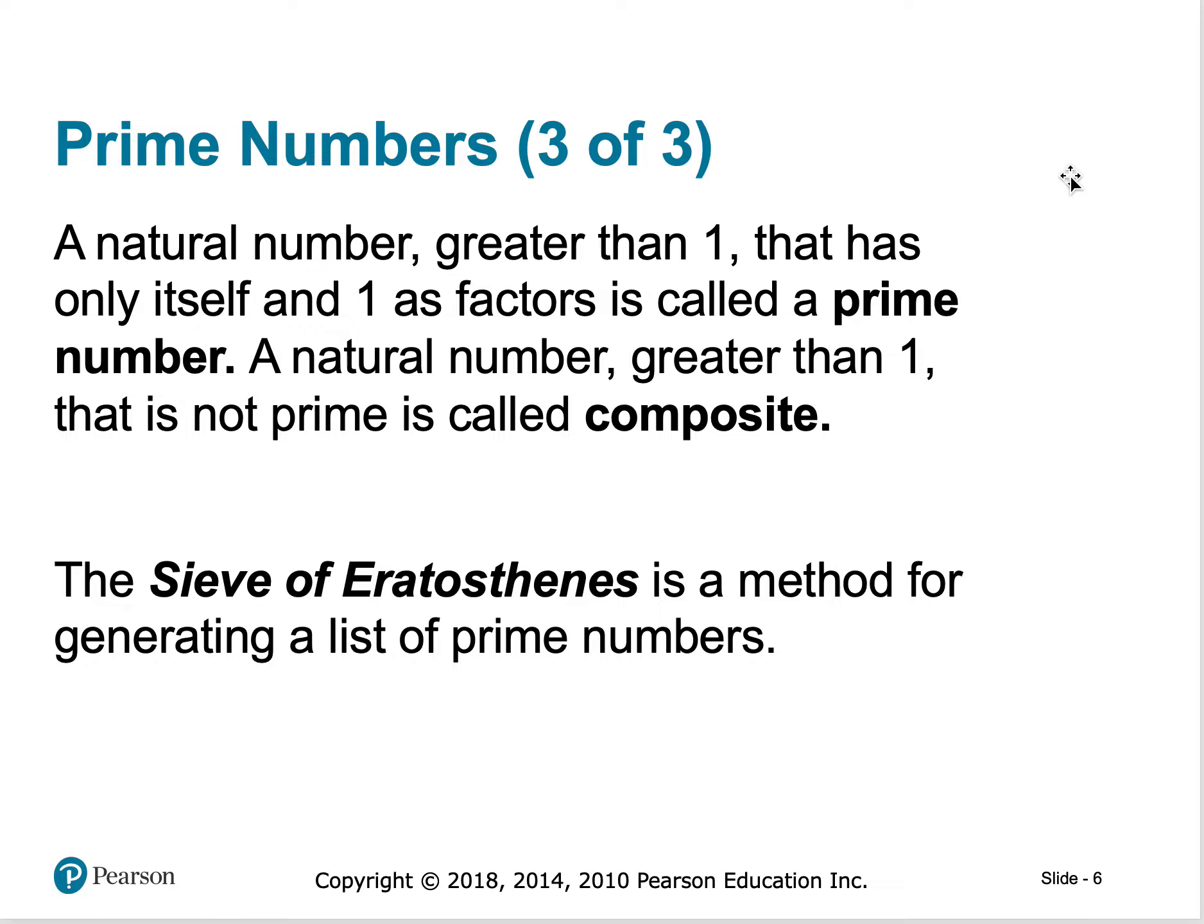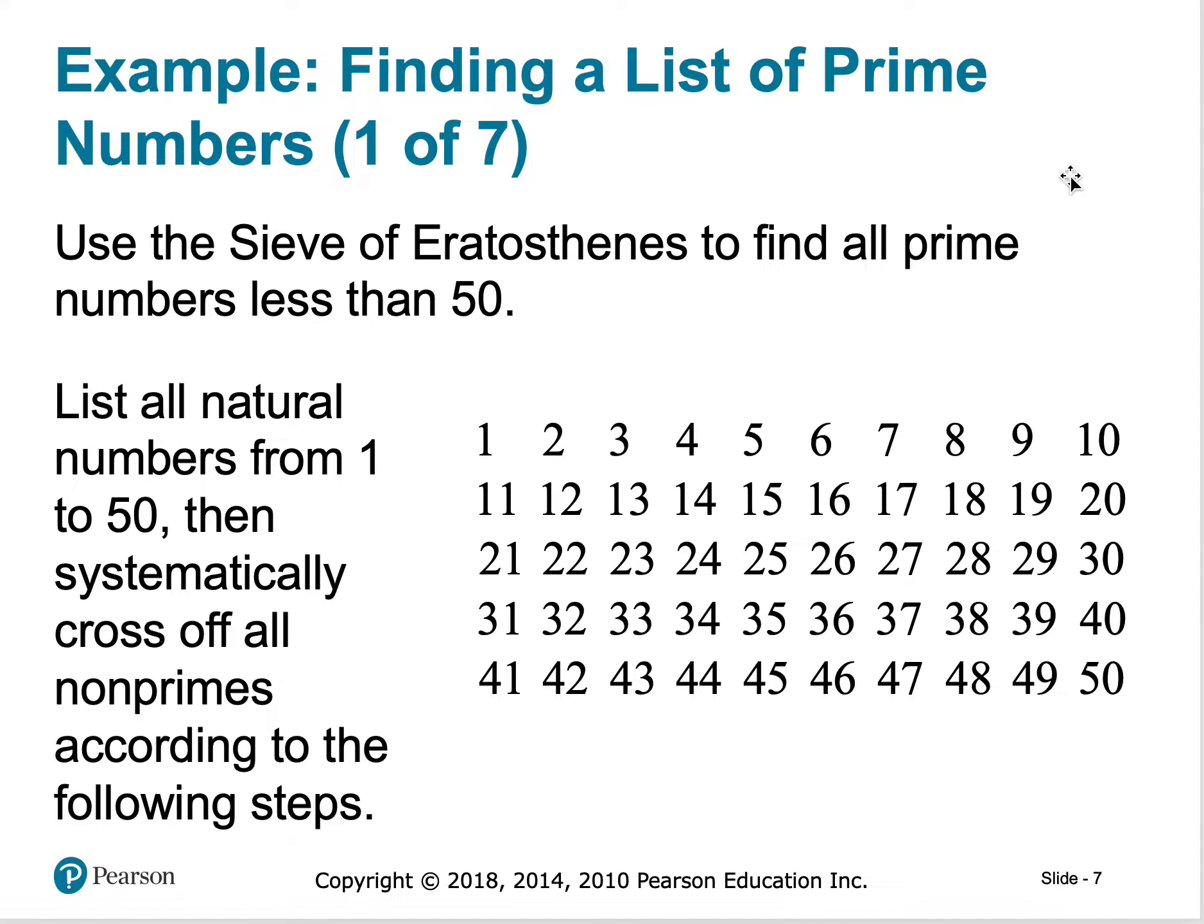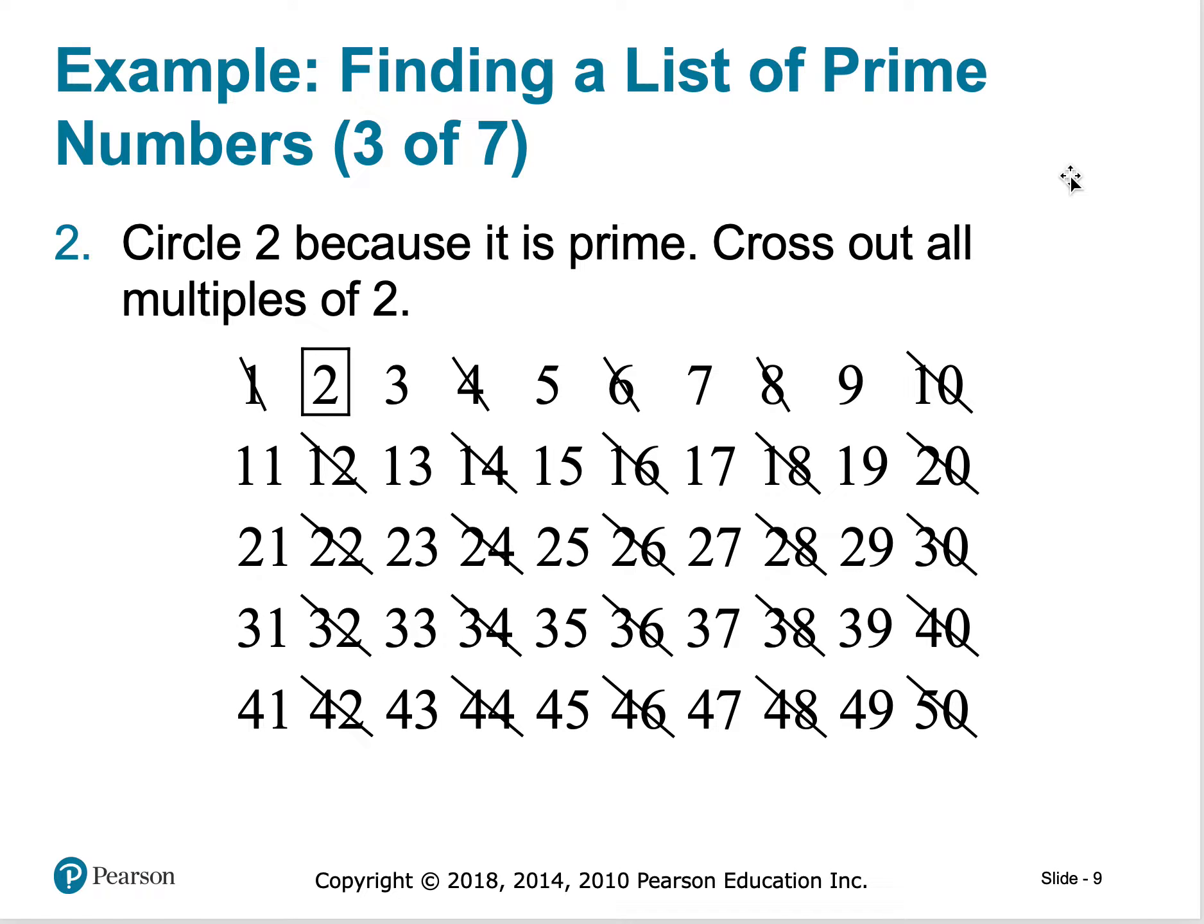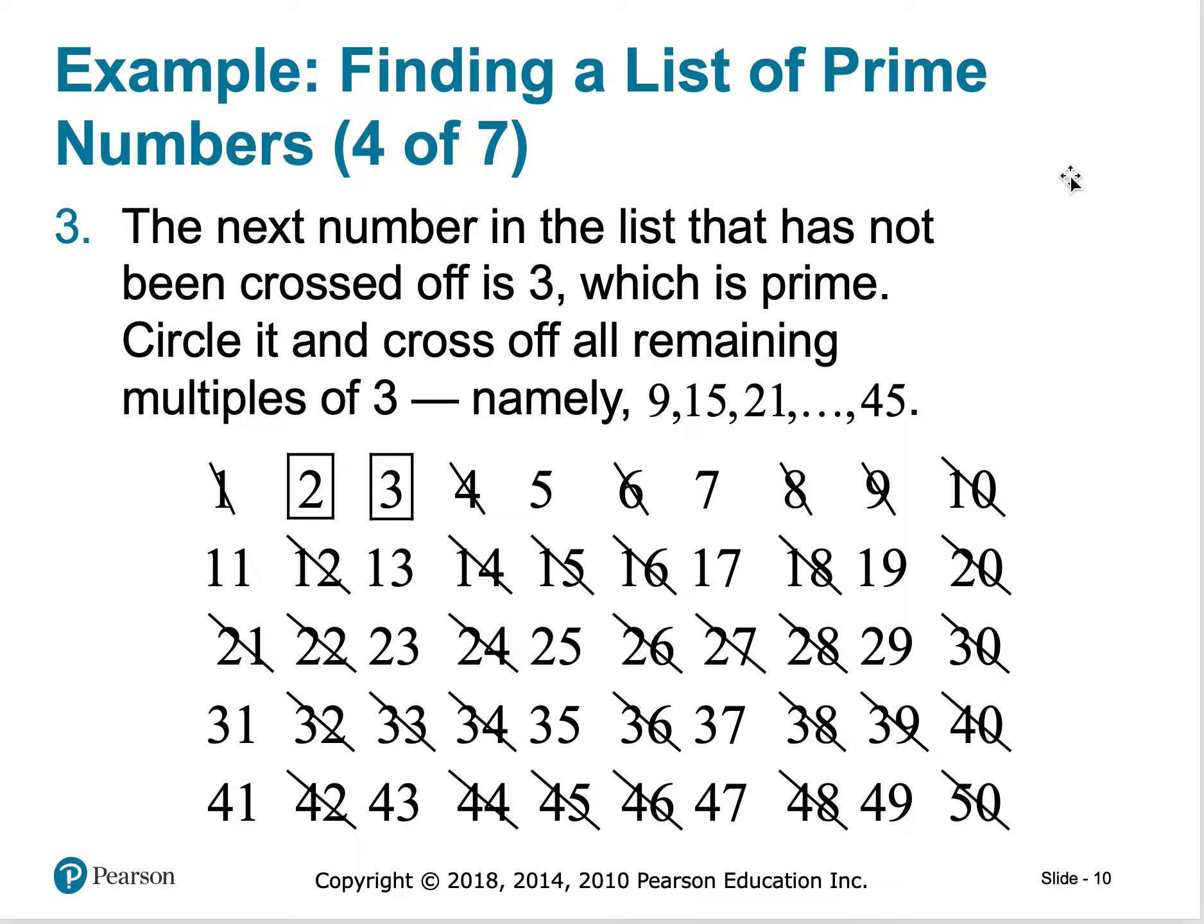The sieve of Eratosthenes is a method for generating this list of prime numbers. This list is all of the prime numbers that are less than 50. I write out all of my digits from 1 to 50, then I'm going to systematically cross off all of our non-primes. 1 is not prime, so I cross it off. 2 is going to be prime, so I'm going to circle it or draw a square, and then I'm going to mark out any multiples of 2. Any multiple of 2 is going to be composite. I'm going to do the same thing with 3 is prime, so I'm going to cut out all the multiples of 3.